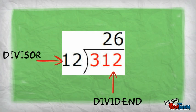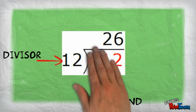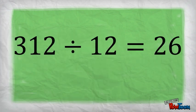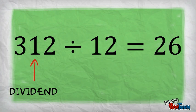Let's look at the same problem written another way. The number 312 is still the dividend and the number 12 is still the divisor.